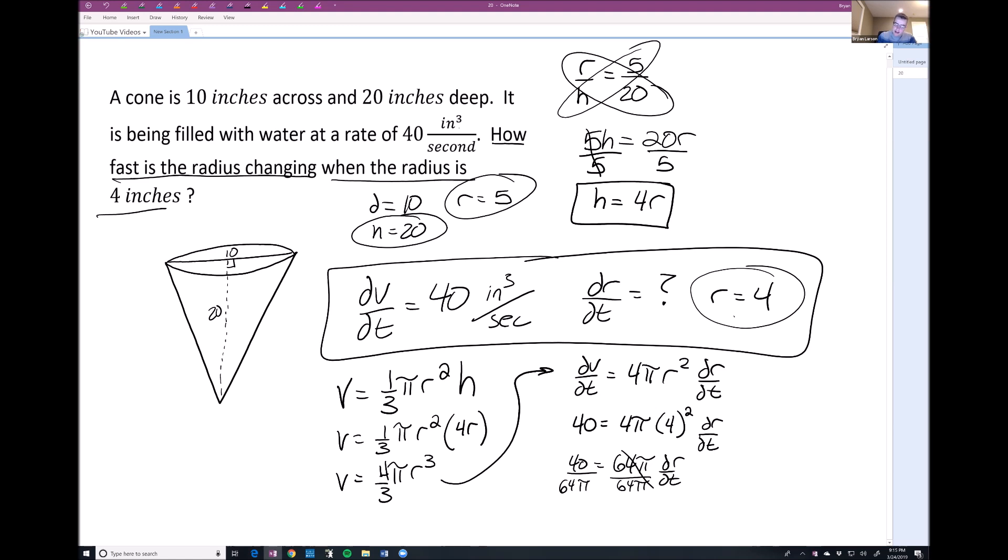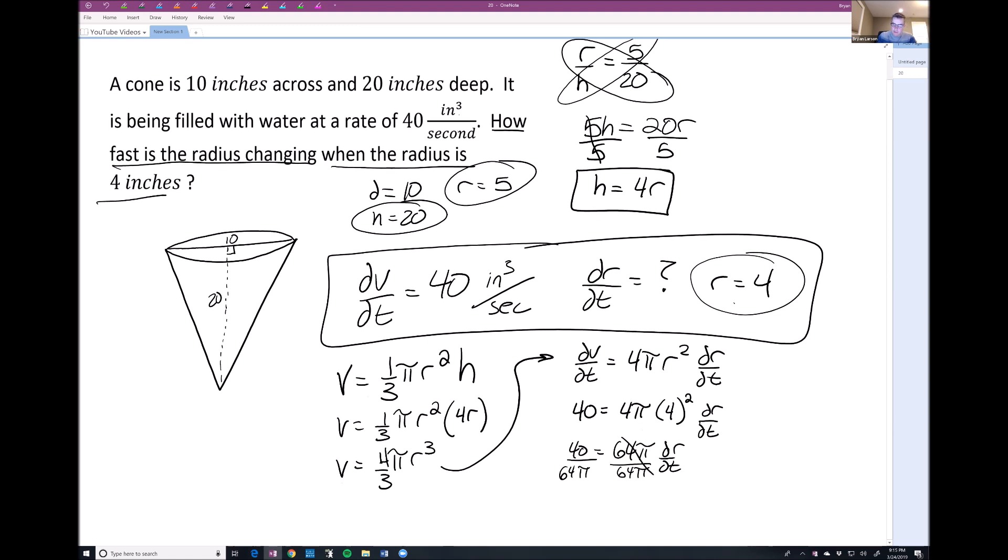And then we're just going to go ahead and simplify this down. So if I divide everything by 8, that would be 5 over 8 pi equals dr/dt. And then since everything was in inches and seconds here, we know we should put the units in there. So let's put that would be inches per second equals dr/dt. And that would be our answer here.